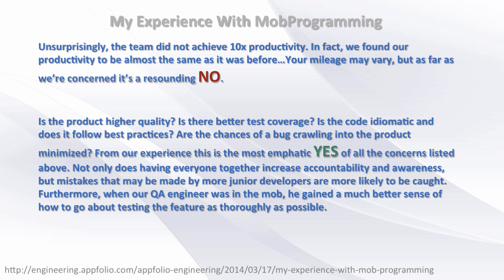They then went on to say: is the product higher quality? Is there better test coverage? Is the code idiomatic and following best practices? Are the chances of a bug crawling into the product minimized? From their experience, this was the most emphatic yes on all the concerns listed. Not only does having everyone together increase accountability and awareness, but mistakes made by more junior developers are more likely to be caught. Furthermore, when the QA engineer was in the mob, he gained a better sense of how to test the feature thoroughly. So in the first section they say they did not achieve 10x, and then they go on to describe exactly what 10x looks like — it just doesn't look like that today. It looks like, at the end of the year, you've produced 10 times more. Not 10 times more every single day.